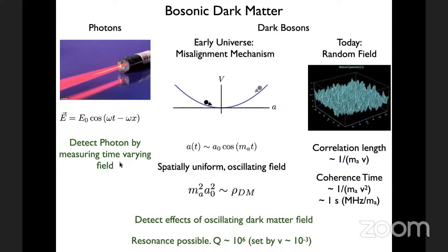The goal is to detect the effects of this oscillating dark matter field — just like detecting a radio wave by measuring its time-varying electromagnetic field. I'll similarly detect the time-varying classical field associated with the axion. There is a natural resonance: the coherence time is 1/(mv²), the frequency is m, and with v ~ 10^-3, I have 10^6 oscillations before the phase changes. So I can use a resonator with quality factor about 10^6 to listen to the dark matter signal.